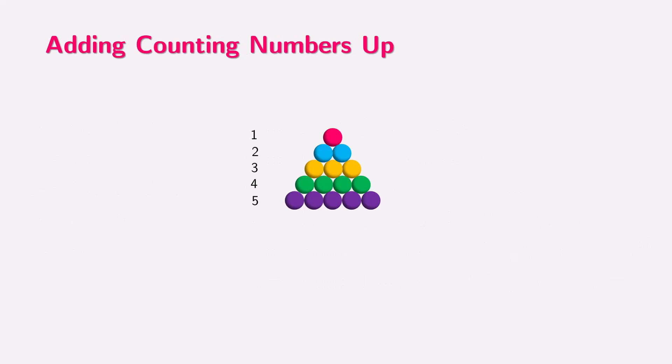When we add up counting numbers like 1, 1 plus 2, 1 plus 2 plus 3, we can imagine it as a growing triangle. Each new row adds more dots to form a bigger triangle. For example, 1 plus 2 equals 3.